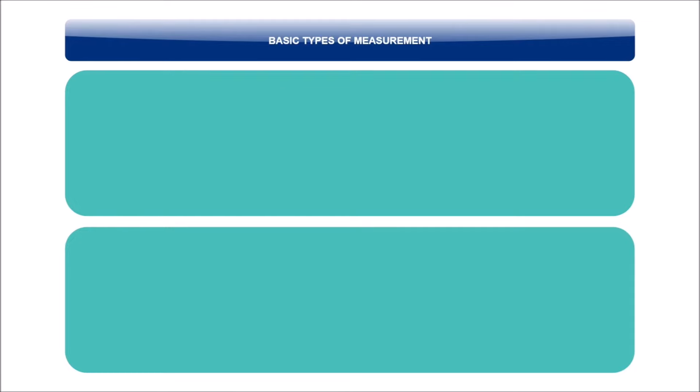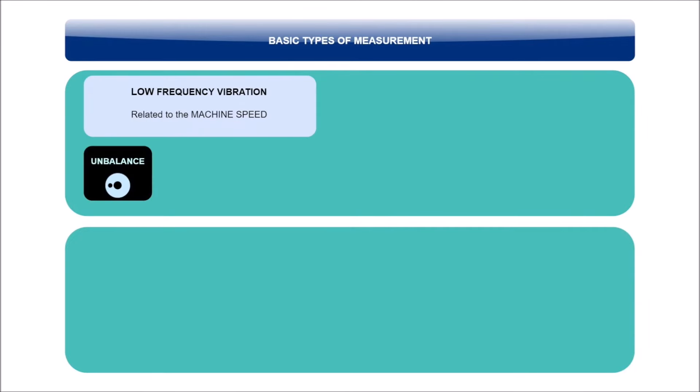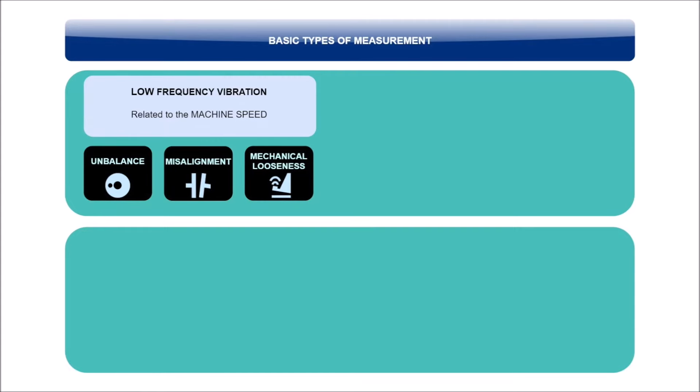All mechanical faults which are related to the speed of the machine, such as unbalance, misalignment, and mechanical looseness, are considered to be low frequency vibrations. These vibrations are measured as velocity in millimeters per second or inches per second. Maybe you are asking now how you can measure velocity with an acceleration sensor. With an acceleration sensor you can measure an acceleration value, but the meter, the analyzer, can convert the value to the velocity value. The most common frequency range of this measurement is 10 to 1000 Hz.